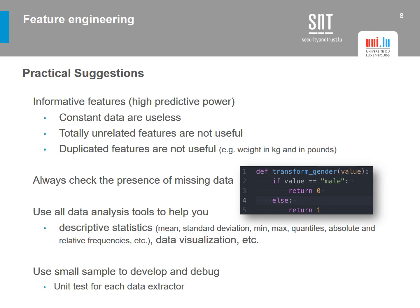Another useful practice is to use a small sample to develop and debug. If we are working with very large data, running computations takes a lot of resources. Using a small portion of the data initially is much easier for development and debugging. We should cross-verify that the data is consistent without missing values when shifting from the smaller sample to the full dataset. We can also use unit tests for each data extractor, transformation, and feature computation.